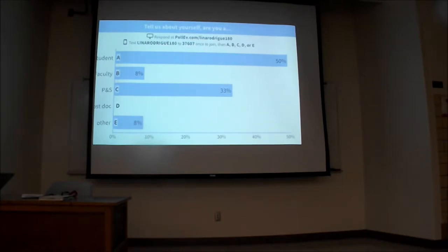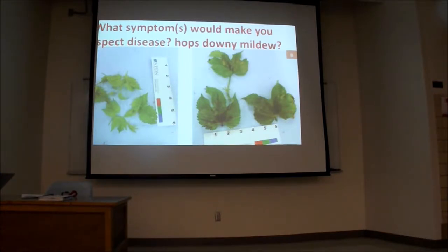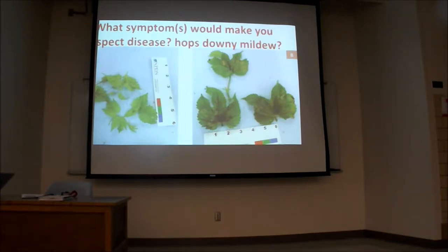We're going to start with a sample that PC and I worked on together. Think of this particular photo as Case A and the other one as Case B. Look at them closely — anyone know this plant? Have you seen it in the field? Hops, corn? Look at it closely. Which one of the two makes you suspect disease? Maybe hops downy mildew — what would you expect from a downy mildew?